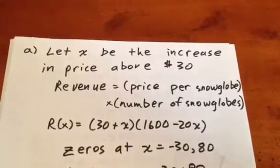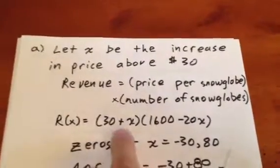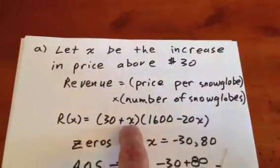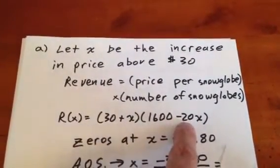That means that this particular parabola, which opens downwards, we know that because the highest degree on X will be 2, and the coefficient of that will be negative.